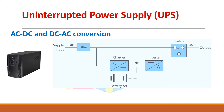This is the circuit diagram of a UPS. When there is a power supply, it supplies the load directly and at the same time charges the battery through this rectifier — an AC to DC converter. When there is a power failure, the battery supplies the load through this inverter, which converts DC to AC.